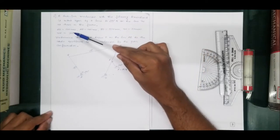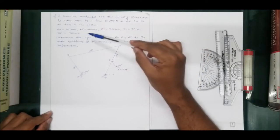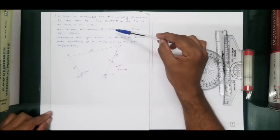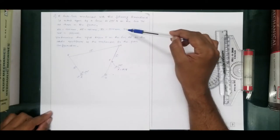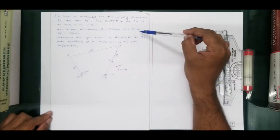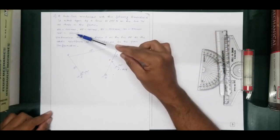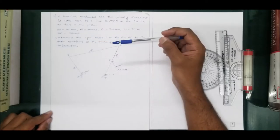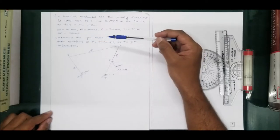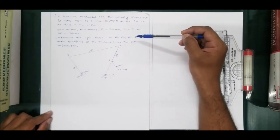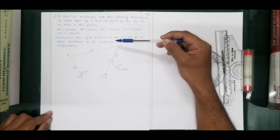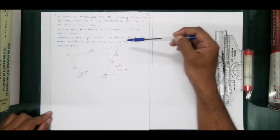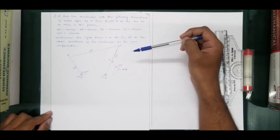The dimensions are specified: AD is 500 mm, AB is 400 mm, BC is 1000 mm, DC is 750 mm, and DE is 350 mm. Determine the input torque on link AB for the static equilibrium of the mechanism for the given configuration.